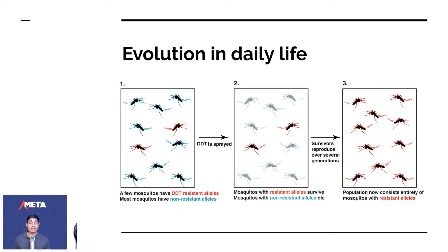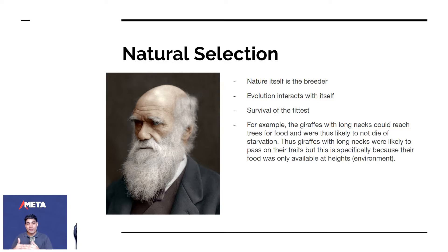Natural selection is an extension of artificial selection. Charles Darwin made the extraordinary claim that nature has been breeding all species — putting in artificial constraints and removing parts of different species so that only some parts survive. Nature has been the breeder all along.